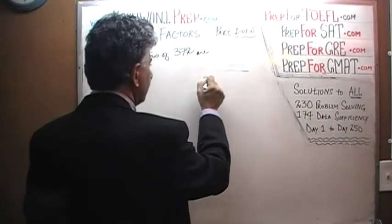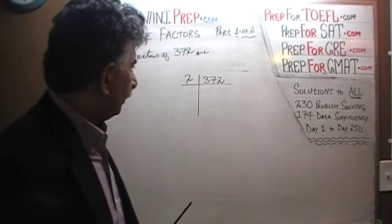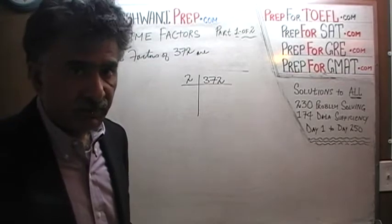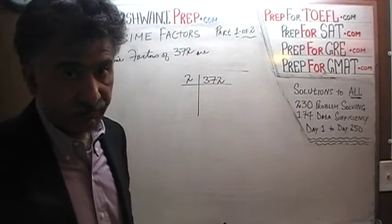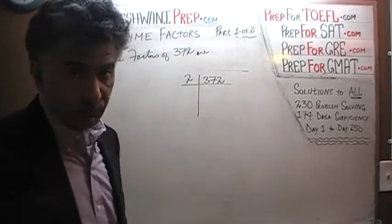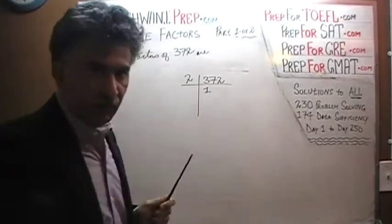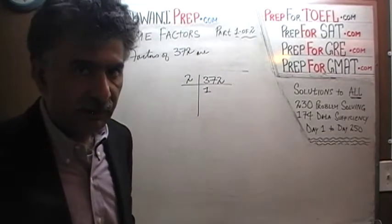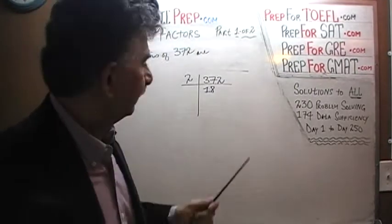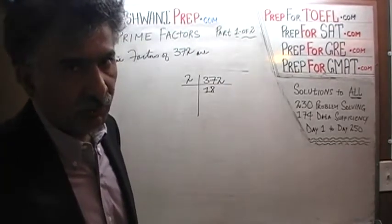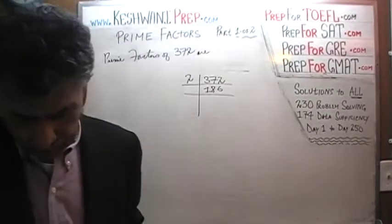372. Let's begin. 372 is an even number, so we must divide it by 2. Is 372 divisible by 3? Yes — 3 plus 7 plus 2 is 12, and 12 is divisible by 3. But we divide by 2 first. How many 2's in 3? 3 has one 2; the remaining 1 joins the 7 to become 17. 17 has eight 2's — 8 times 2 is 16; the remaining 1 joins the 2 to become 12, and 12 has six 2's. We get 186.